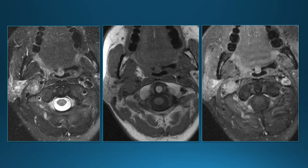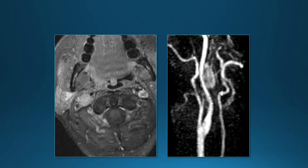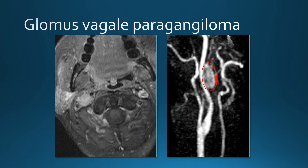CT is typically done very shortly after contrast injection, whereas MR is done usually a couple of minutes after, so the lesion may have time to completely enhance on MRI but not yet on CT. Another mass in the retrostyloid parapharyngeal space — we know it's retrostyloid because it displaces the carotid artery anteromedially. On MR angiogram we can see the mass right behind the internal carotid. This lesion represents a paraganglioma — specifically a glomus vagali paraganglioma.